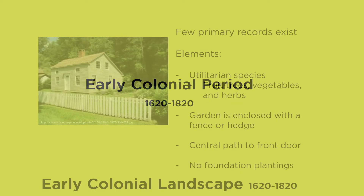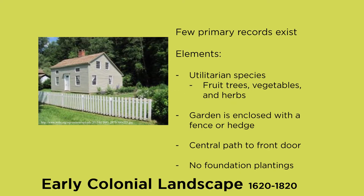If we're talking about a timeline, we start at the beginning — the early colonial period, roughly 1620 to 1820. A lot of landscape historians admit there are few primary records that exist, so there was a lot of conjecture to determine what was used back then. We know from these sources there was a focus on utilitarianism — growing what we need to survive. There were a lot of fruit trees, vegetables, herbs, fruits, etc.